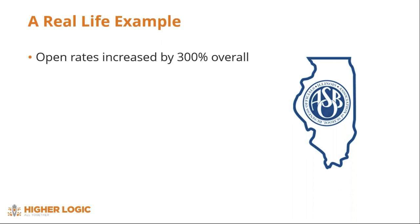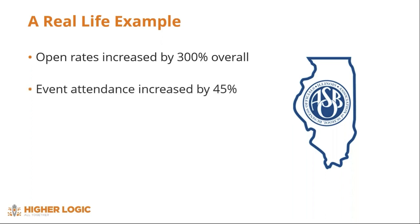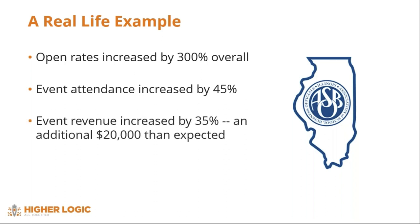By switching from a shared IP like MailChimp or Constant Contact they saw about a 10 to 20 percent higher deliverability rate. The final factor was a tool called Optimize Sending, built into all of our marketing automation platforms. It's a machine learning program that looks at when each individual historically has opened emails and then sends your message at the time they are most likely to open it, ensuring your email is right at the top of their inbox. This led to a 45 percent increase in event attendance and a 35 percent increase in event revenue — an additional $20,000 more than they were expecting, all from a single automated event.